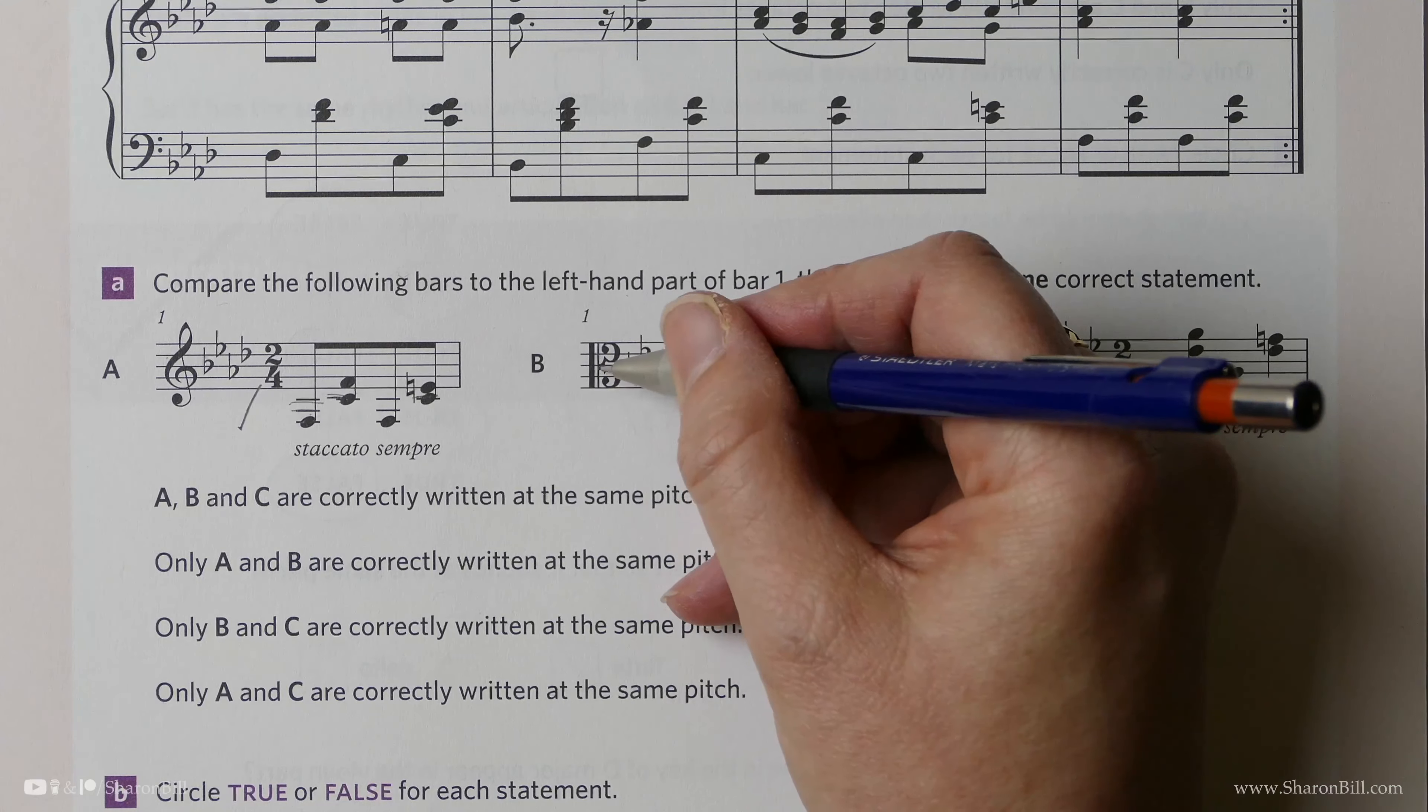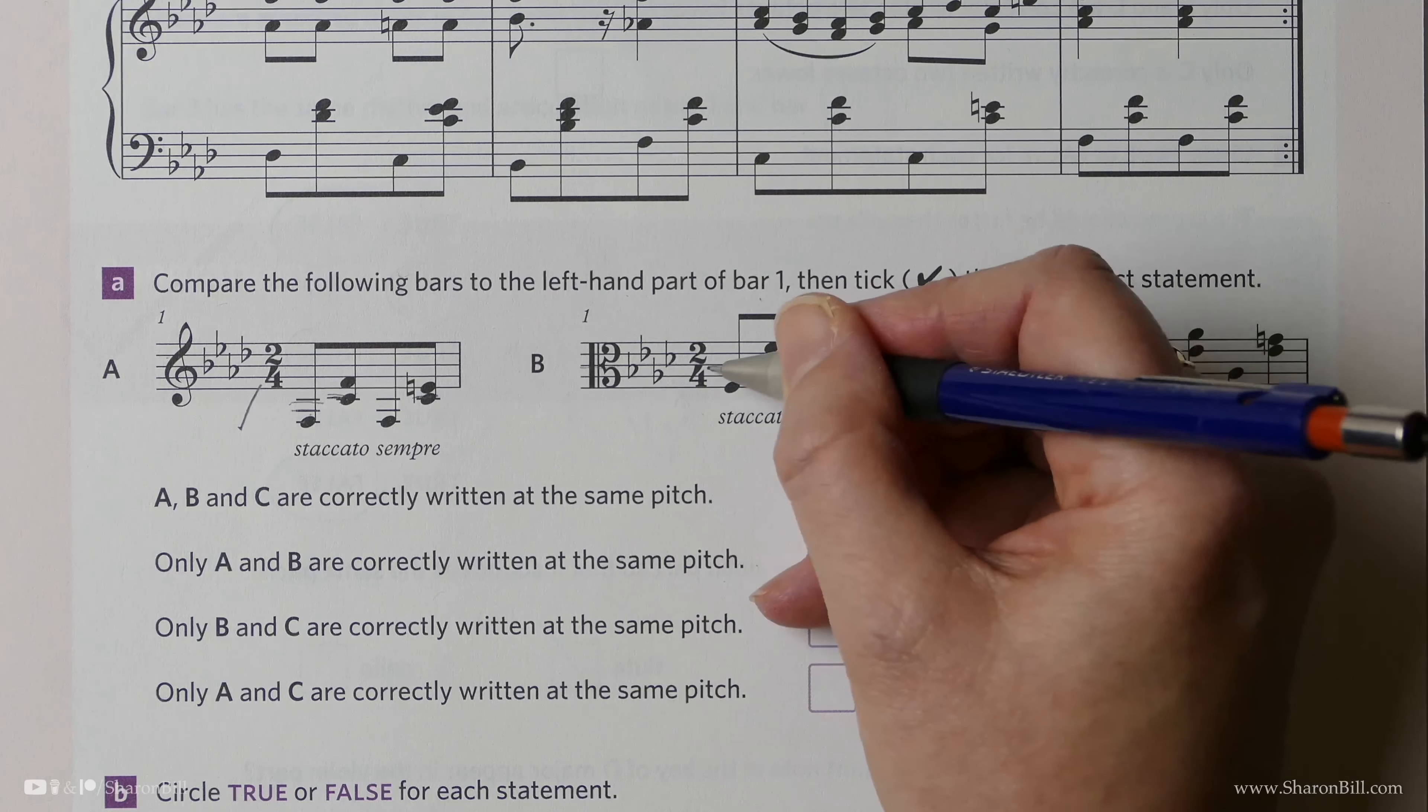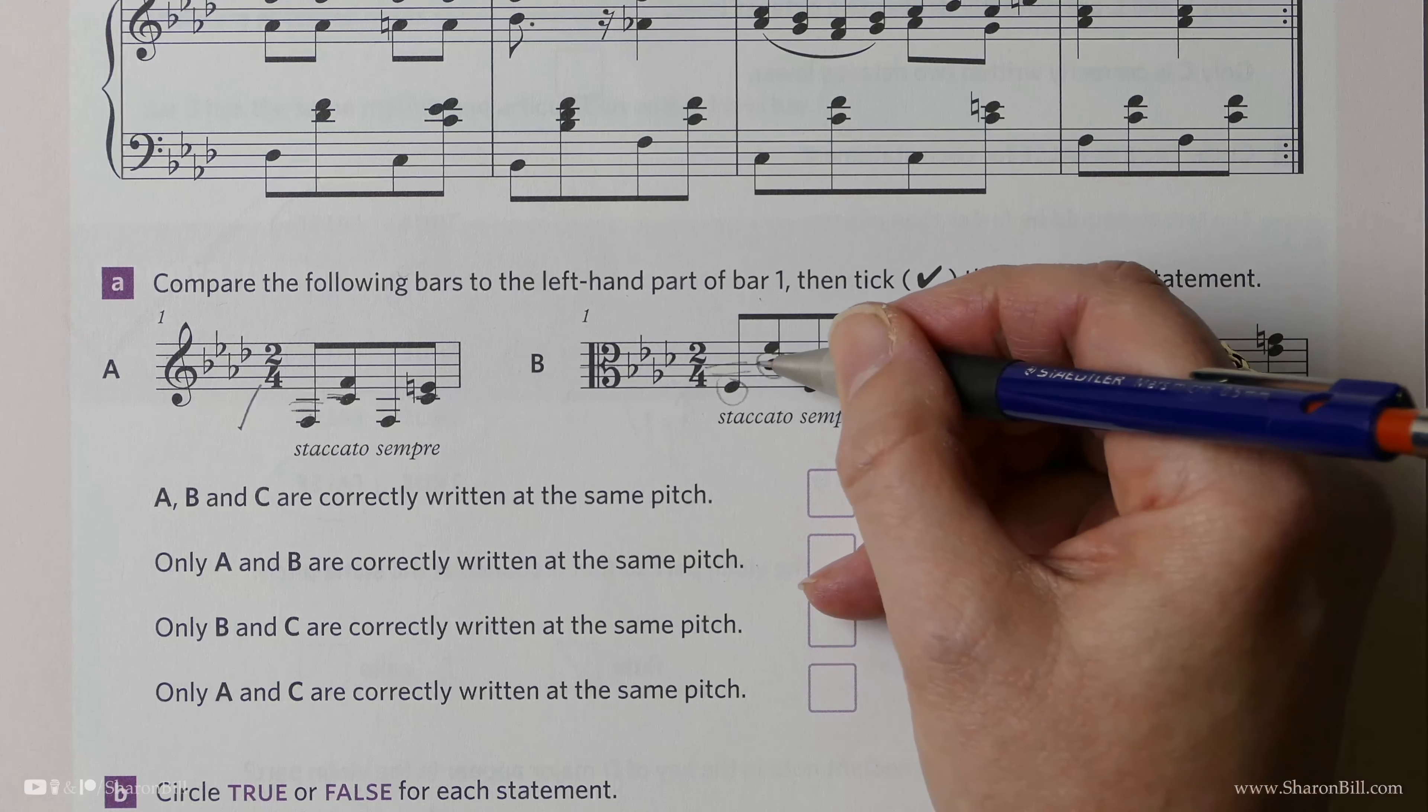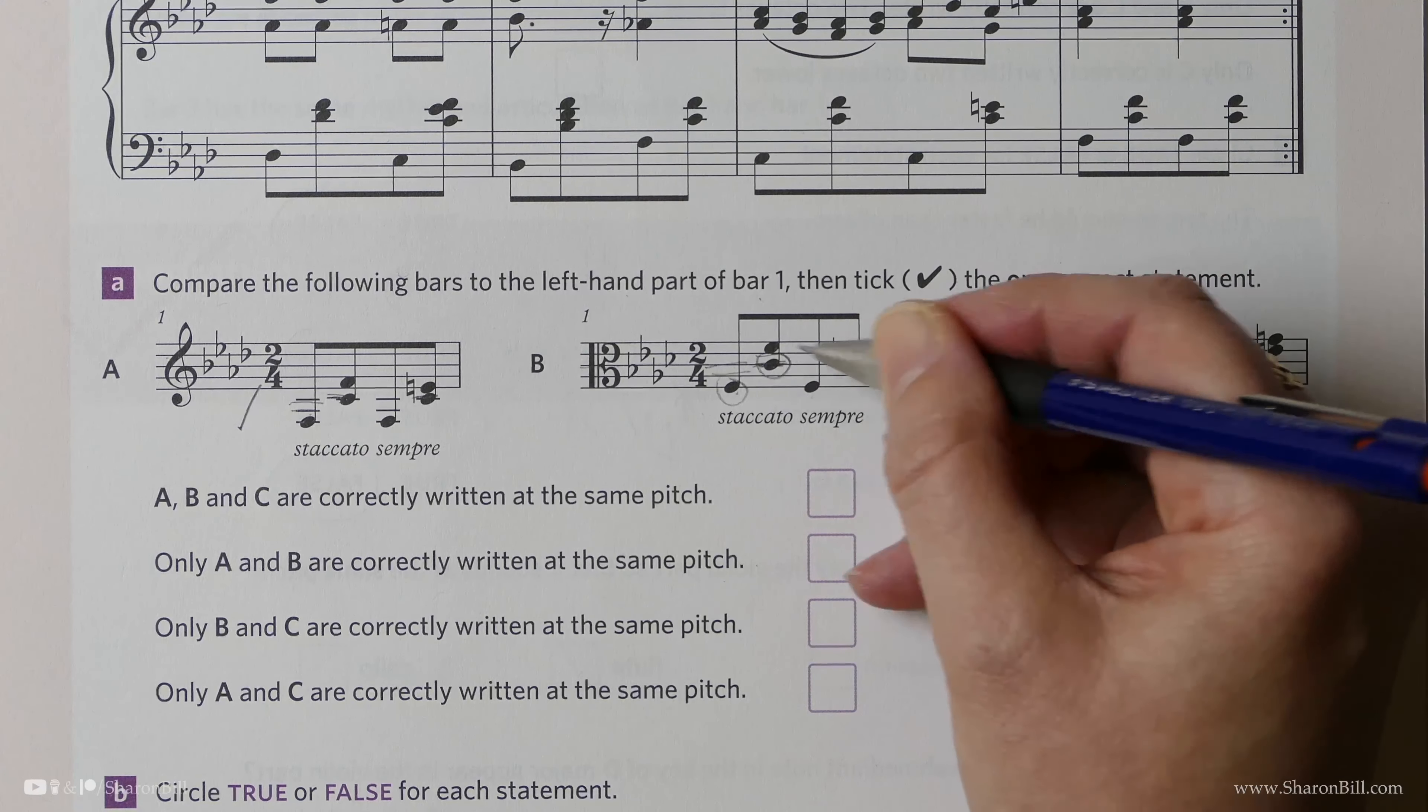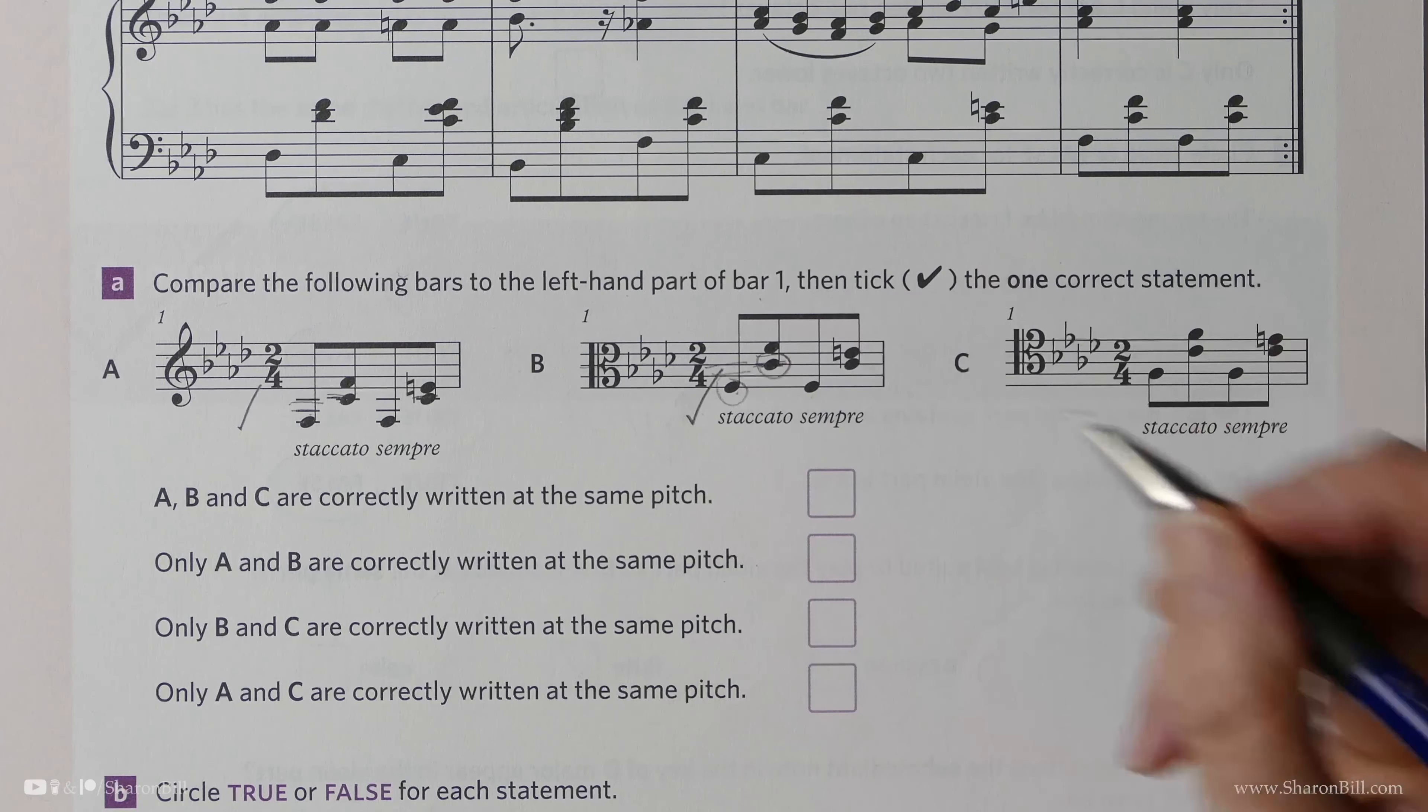Now here in the alto clef, that's middle C, and this is C, B, A, G, F, and C, D, E, F above. So we have the F below, the F above, and there's middle C. Everything else follows suit, so that also is spot on.